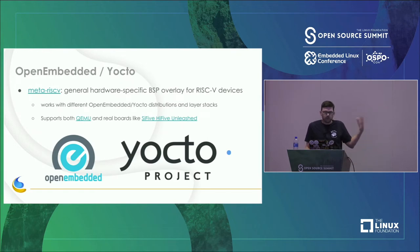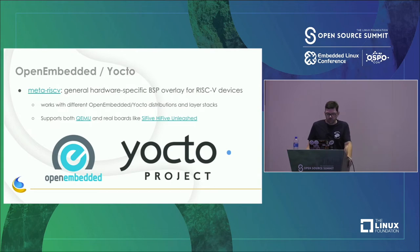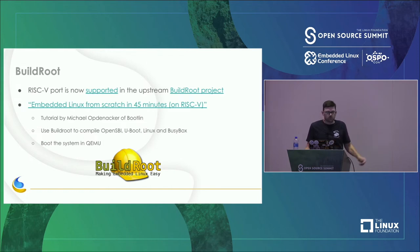If you don't need a full binary distro, OpenEmbedded/Yocto are a great option. The meta-riscv layer has support for both QEMU and most available boards like the SiFive boards. An alternative is BuildRoot, which also has RISC-V support — that was the presentation Michael did at FOSDEM showing how to go from scratch with BuildRoot to a bootable RISC-V system in QEMU.